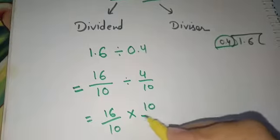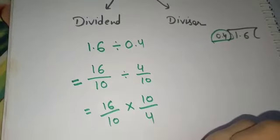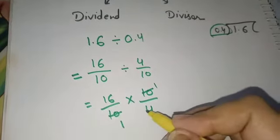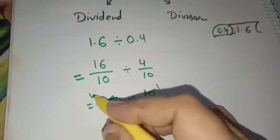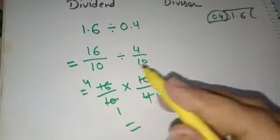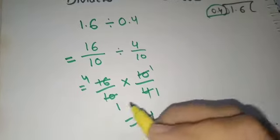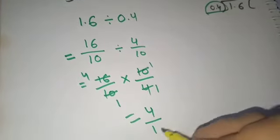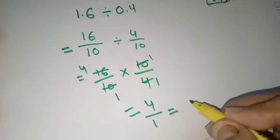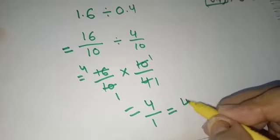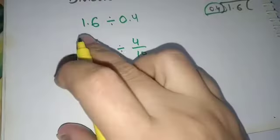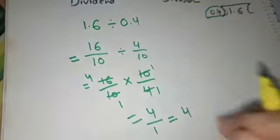Now try to cancel. 10 ones are 10, 4 ones are 4. Cancellation has been done. Numerator will be multiplied by numerator, 4 ones are 4, 1 ones are 1. If any number has denominator 1 then we can leave it and 4 will be the answer. This is the method of division of a decimal by a decimal.